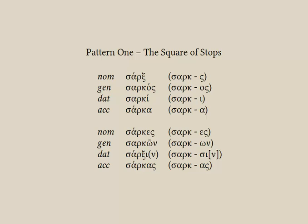So now we've seen the main features in Pattern 1. The book provides more details on how these endings work on each of the types of endings of the square of stops, but it's all along the same lines as what we've looked at.